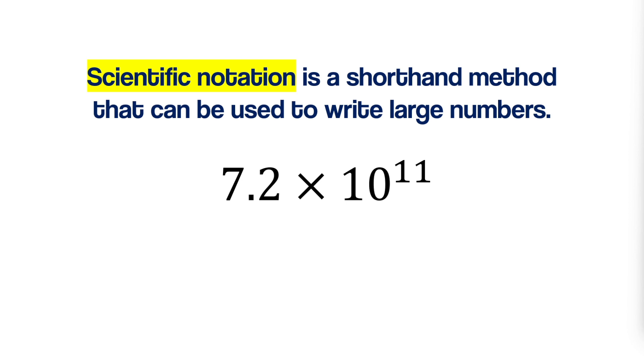A number written in scientific notation is represented by two factors. The first factor is a number greater than or equal to one, but less than 10. And the second factor is a power of 10, indicated by an exponent that determines how many spaces the decimal point should be moved.